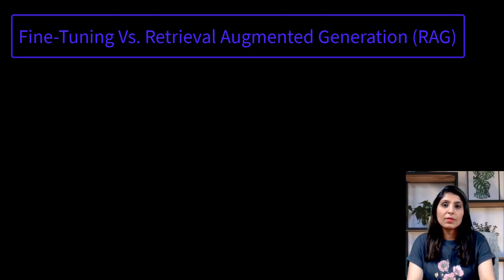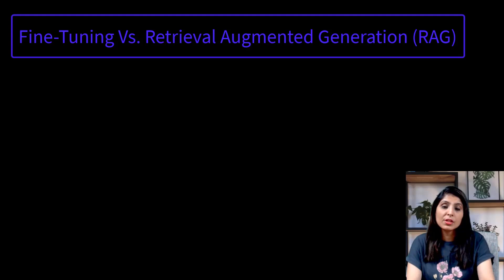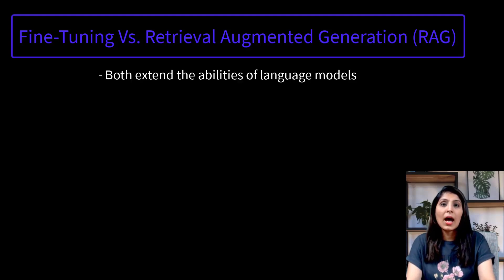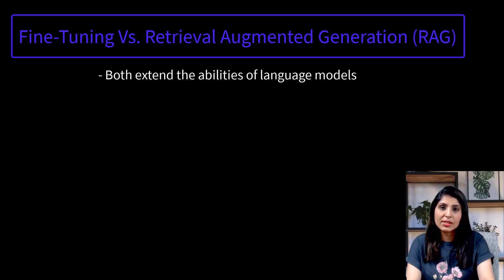Hello everyone, my name is Arohi and welcome to my channel. In today's video we'll try to understand the difference between RAG and fine-tuned models — retrieval augmented generation and fine-tuning. These are two different approaches used to enhance the capabilities of large language models. We'll explore what the difference is between them and when to use them, with the help of an example.